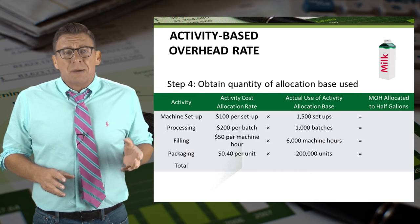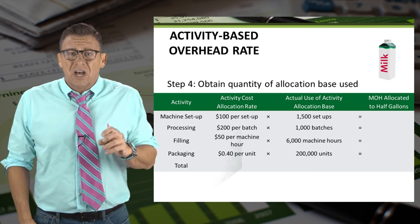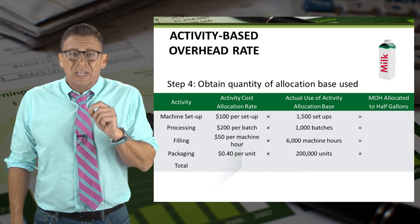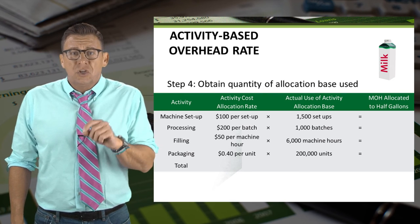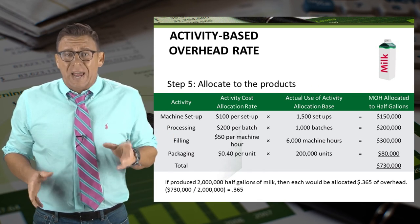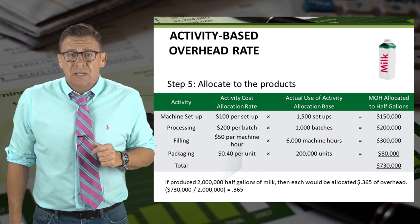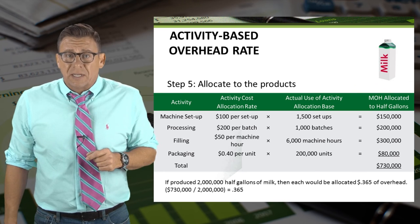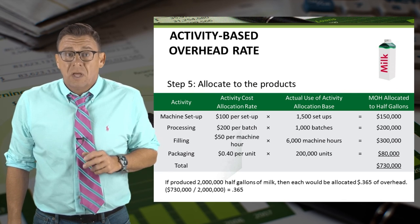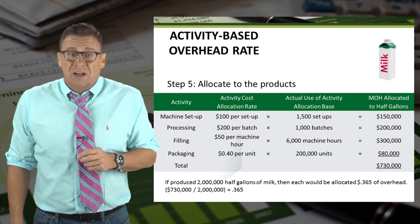In this case, these numbers are assumed to be the usage for half gallons. Notice the activity cost allocation rates don't change. The only thing that changes is how much each activity is being used to manufacture half gallons of milk. Once we complete the table, we can see that half gallons were allocated $730,000 of the $2.5 million of overhead. Assuming we manufacture 2 million gallons, then each half gallon of milk would be allocated 36.5 cents of overhead. This is one of the reasons why half gallons are more than 50% the cost of a gallon of milk.